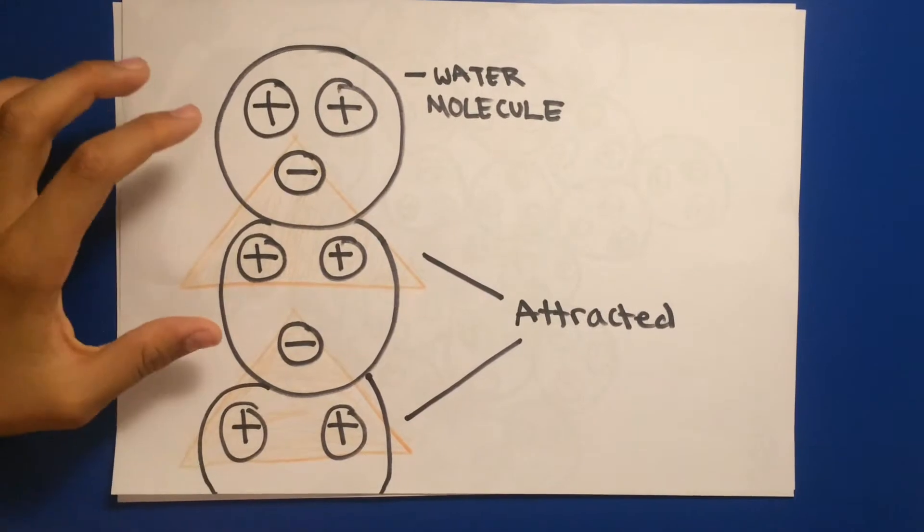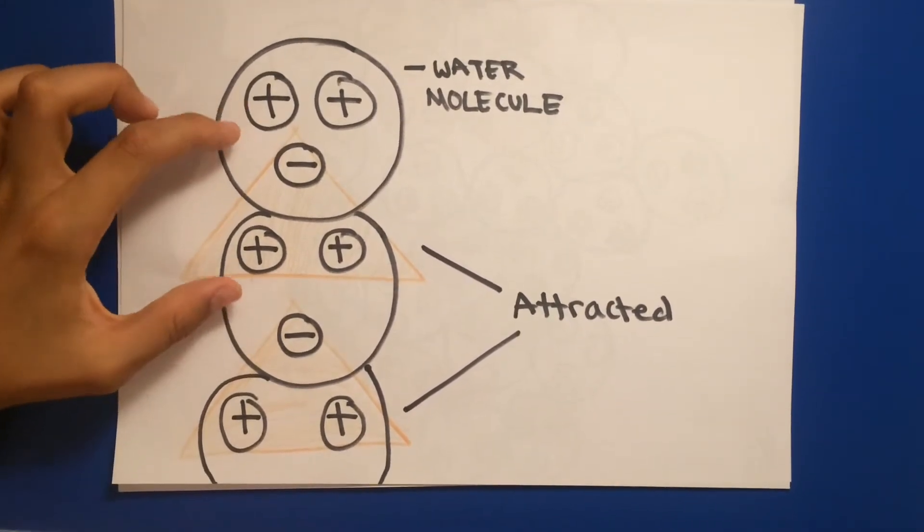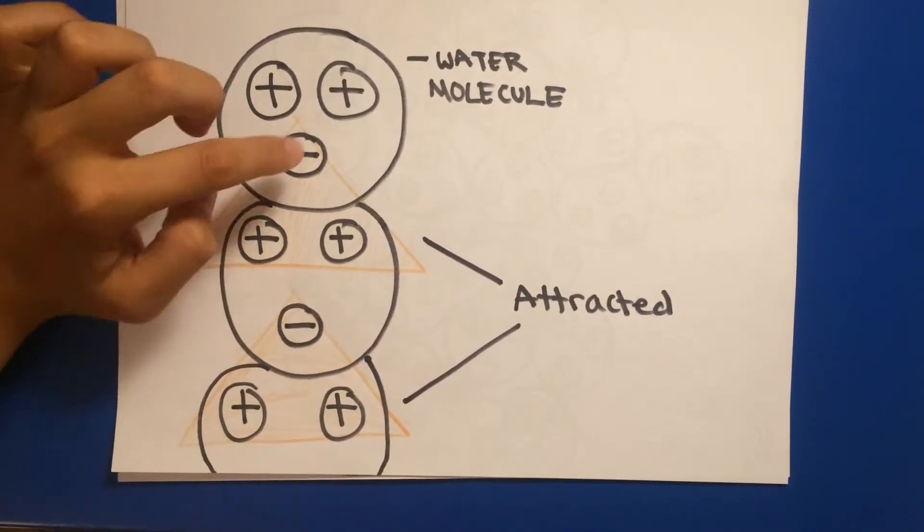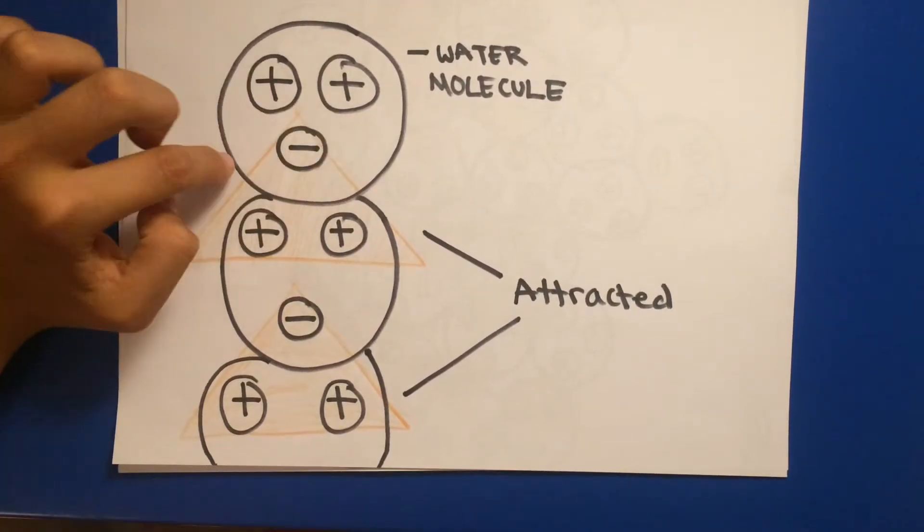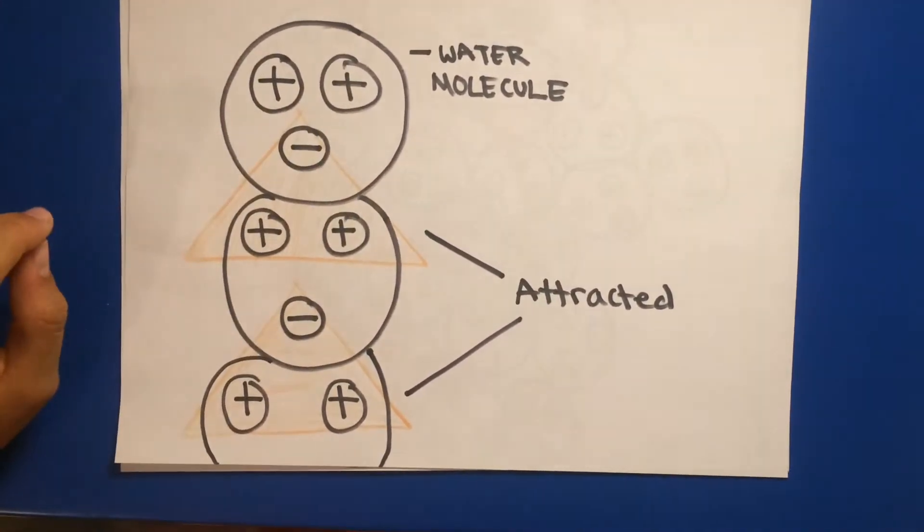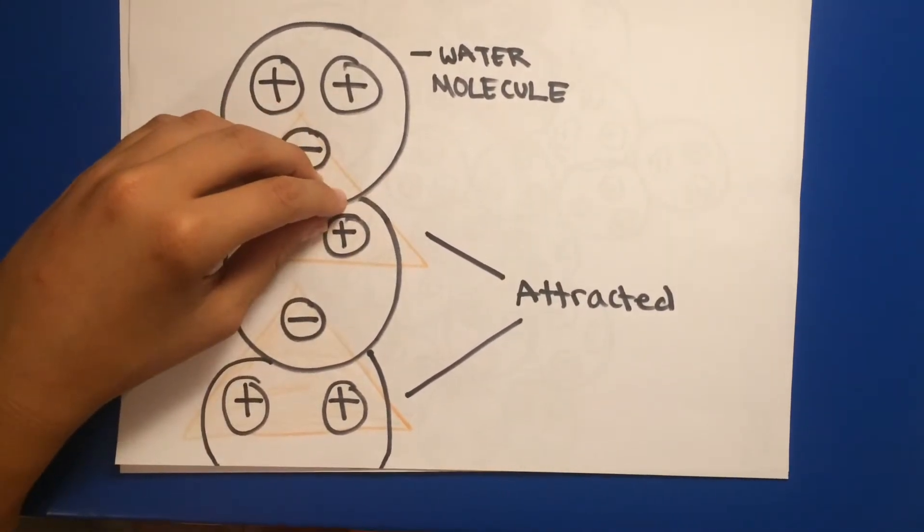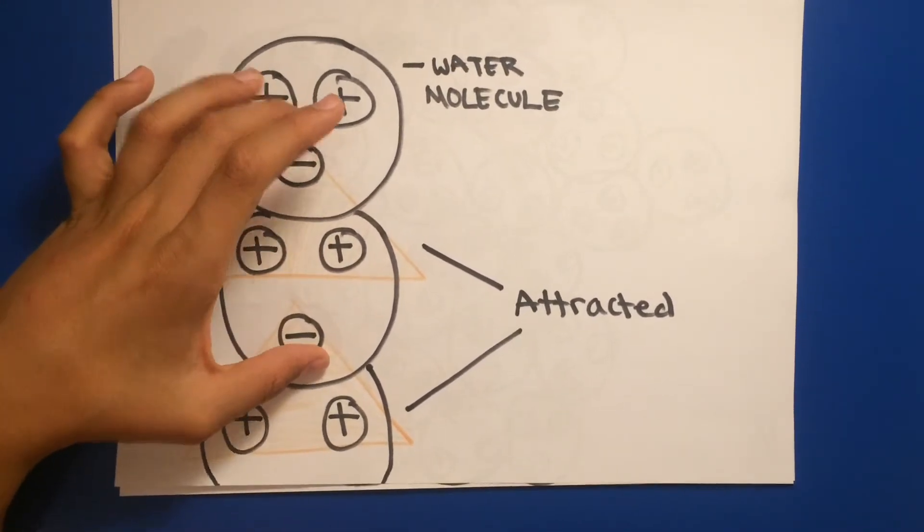So when two water molecules come together, the negatively charged side on one of them and the positively charged side on one of them are attracted, yet they're two different water molecules.